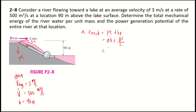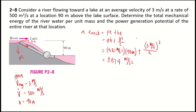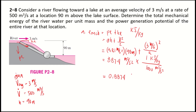Substituting: 9.81 m/s² times 90 meters plus 3² divided by 2, which gives 887.4 m²/s². Since 1 kJ/kg equals 1,000 m²/s², the total mechanical energy per unit mass is 887.4 divided by 1,000, which equals 0.8874 kilojoule per kilogram. This is the total mechanical energy per unit mass.